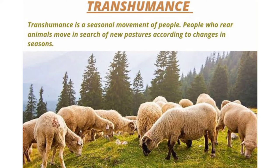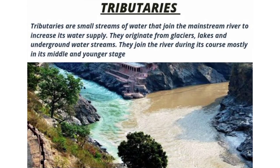Tributaries. Tributaries are small streams of water that join the mainstream river to increase its water supply. They originate from glaciers, lakes and underground water streams. They join the river during its course, mostly in its middle and younger stage.